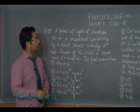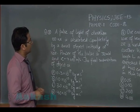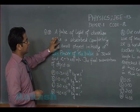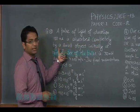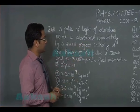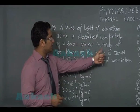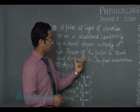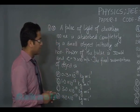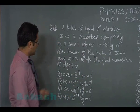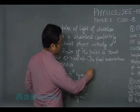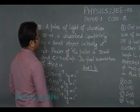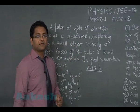Question number three is from photoelectric effect and modern physics. A pulse of light of duration 100 nanoseconds is absorbed completely by a small object initially at rest. The power of the pulse is 30 milliwatt and the speed of light is the standard value. We need to find the final momentum of the object. The correct option is B.